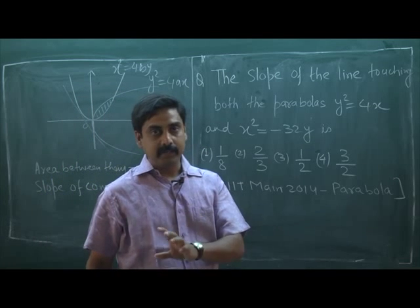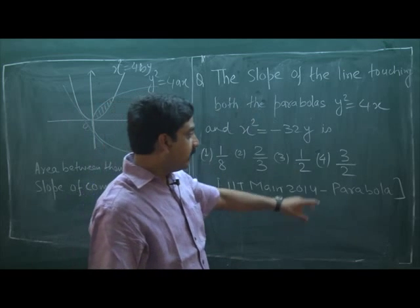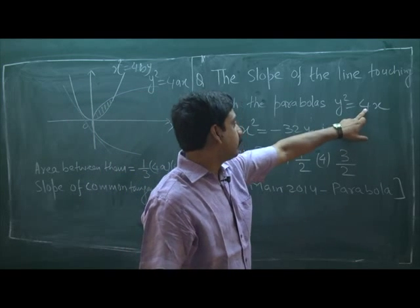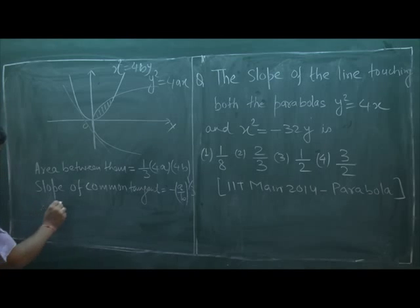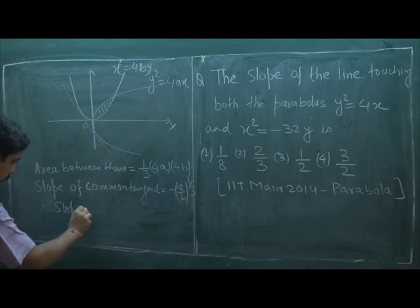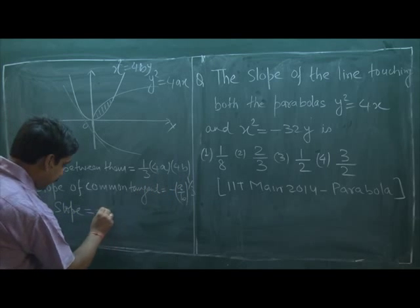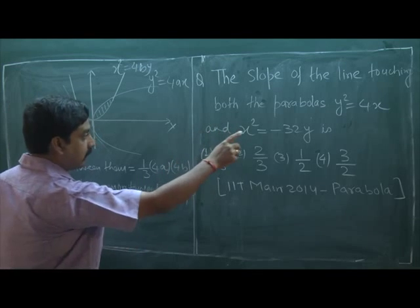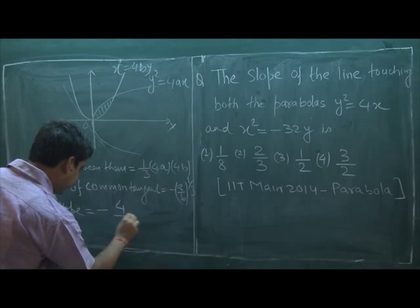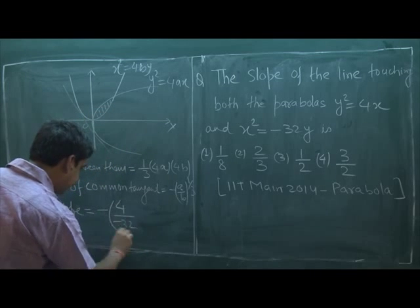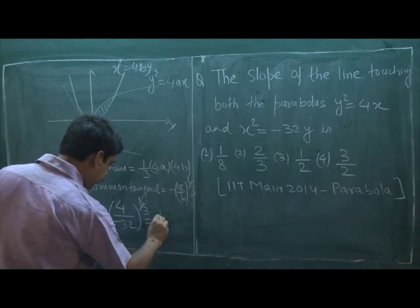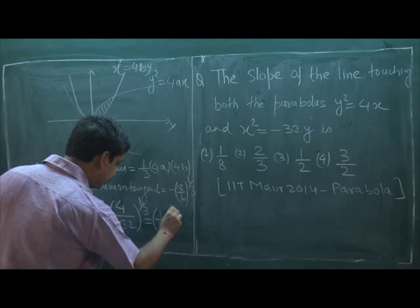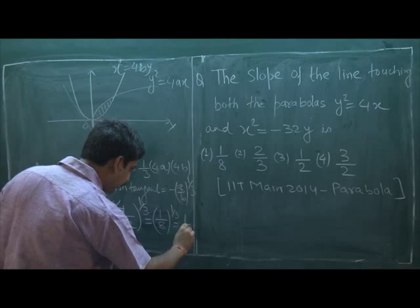These results are very helpful in objective examinations. In the given question, 4a = 4 and 4b = 32. Therefore, the slope is equal to -(4/(-32))^(1/3), which is (1/8)^(1/3), and this equals 1/2.